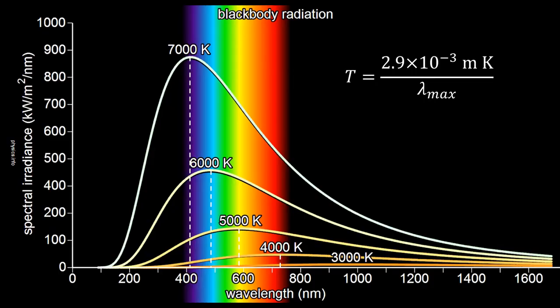Last video, last podcast, we looked at Wien's displacement law, which is given here, and how we can find from the overall shape of the spectrum the temperature of the black-body object — in our case, stars — that produced it.